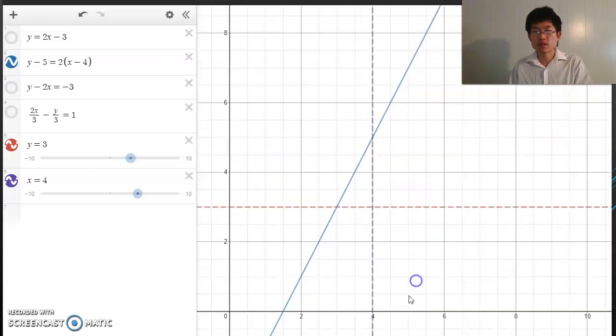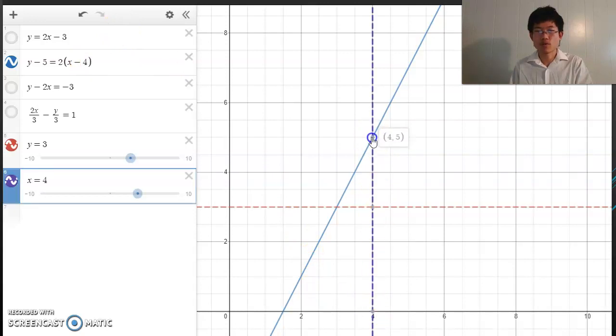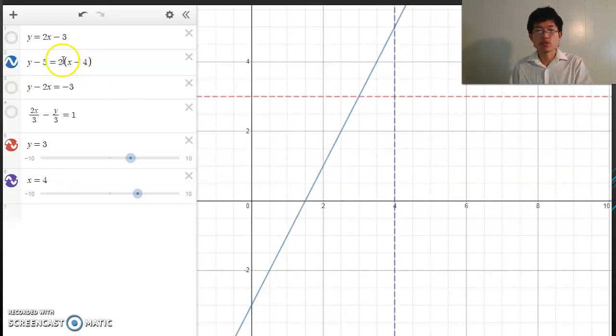If I go to x = 4 and y = 5, (4, 5) is on the line, and the slope is 2 again.